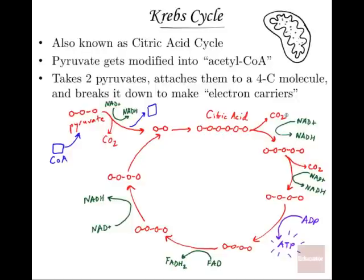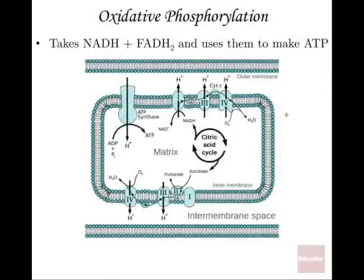The Krebs cycle is an important step in aerobic respiration. Next we go to the cristae of the mitochondria to make a large amount of ATP through oxidative phosphorylation.